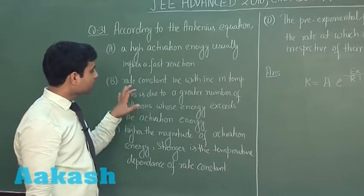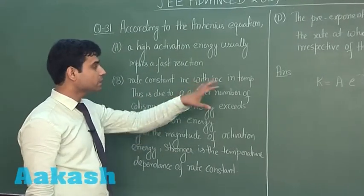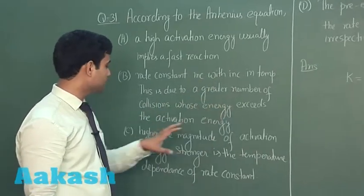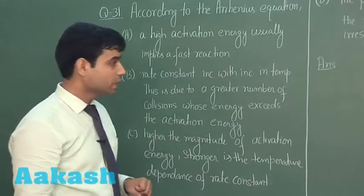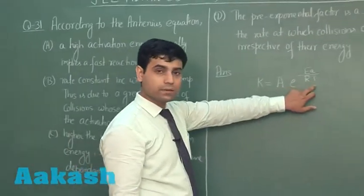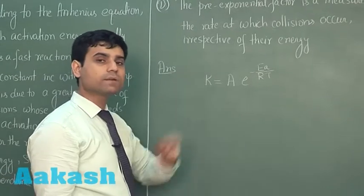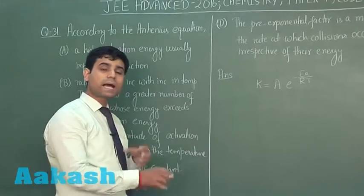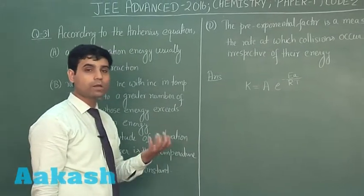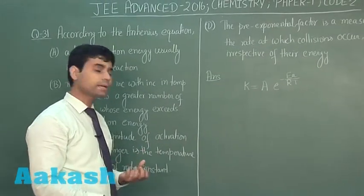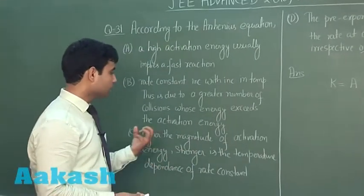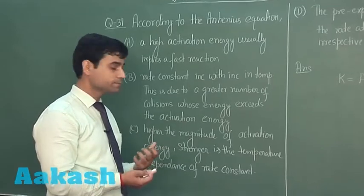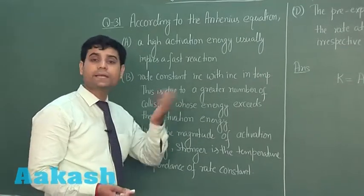If we increase the temperature, the rate constant will increase. When we increase the temperature, the kinetic energy of individual molecules increases, and because of that we have a higher number of collisions, which results in a higher number of molecules having energy greater than the activation energy. So option B is correct.